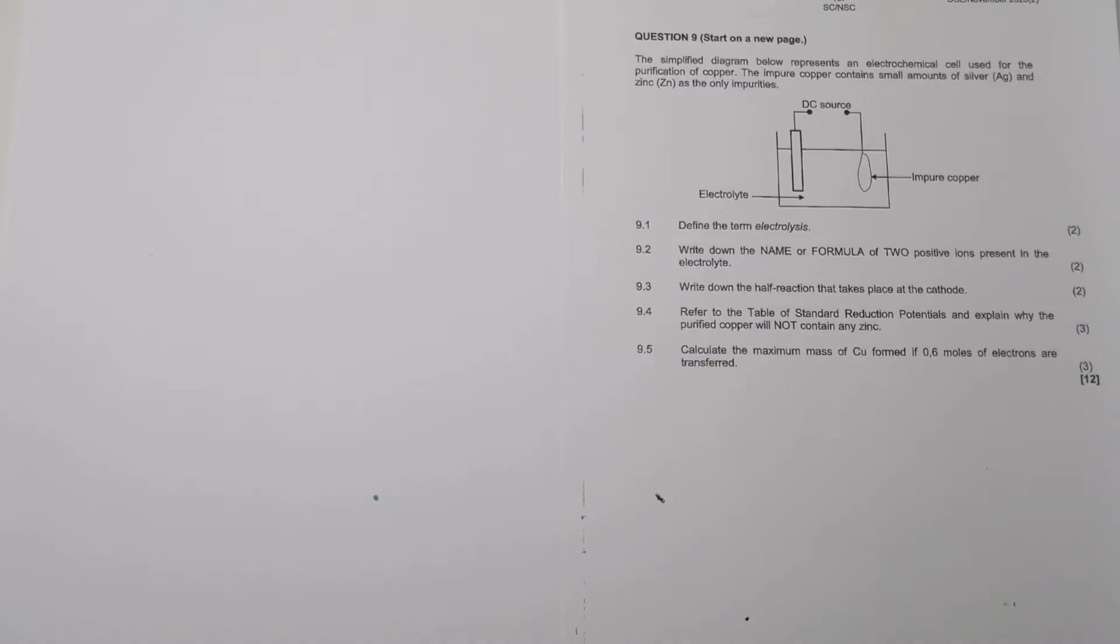Let's have a look at question 9 that has to do with the electrolytic cell. The simplified diagram below represents an electrochemical cell used for the purification of copper. The impure copper contains small amounts of silver and zinc as the only impurities. Remember that unlike the galvanic cell where we convert chemical energy into electrical energy, in the electrolytic cell we're trying to convert electrical energy into chemical energy.